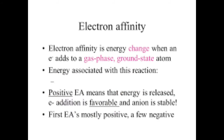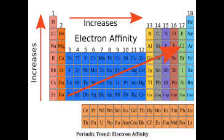When this reaction happens, the energy change is measured as electron affinity. Two points need our understanding: when the energy change is positive — meaning when the electron affinity is a positive value — it means energy is released in this reaction and the anion is stable.